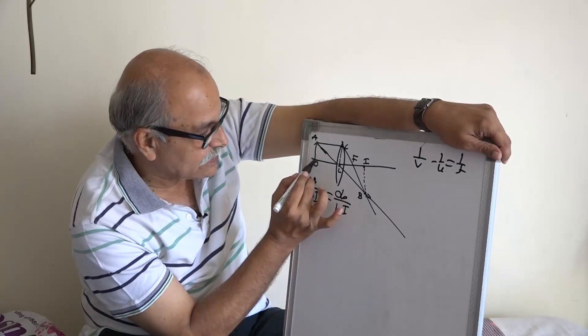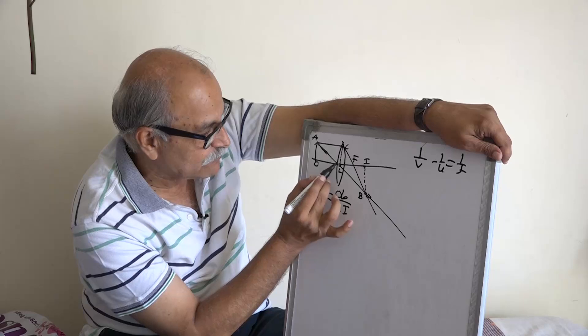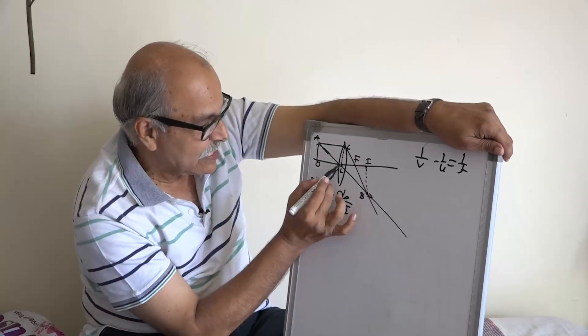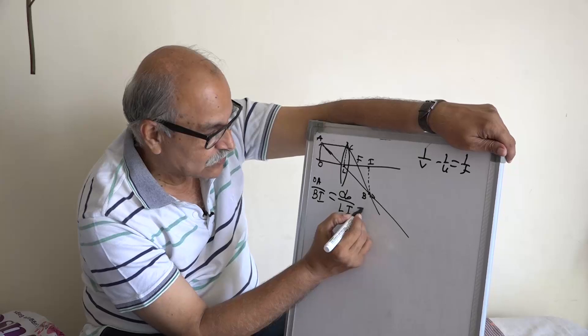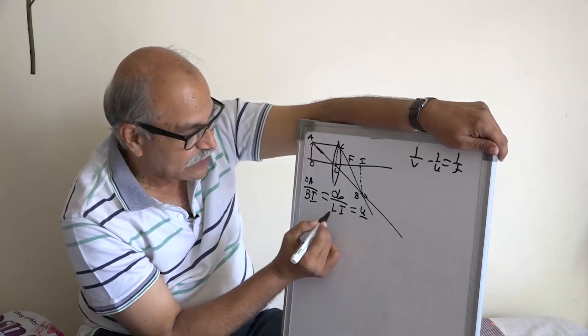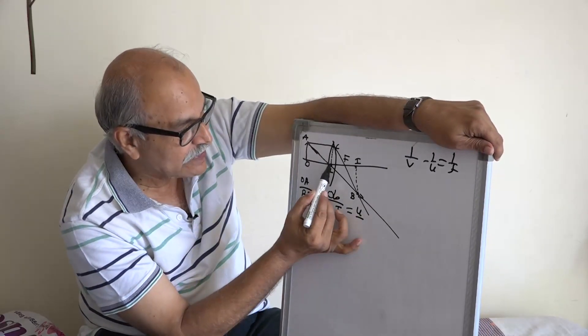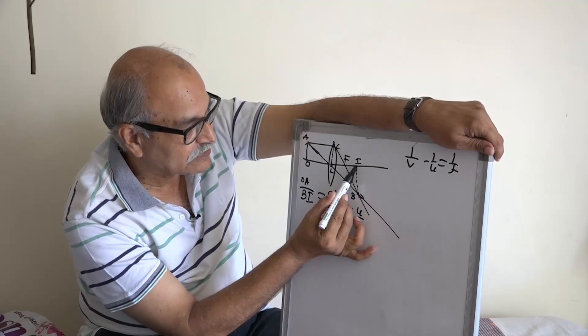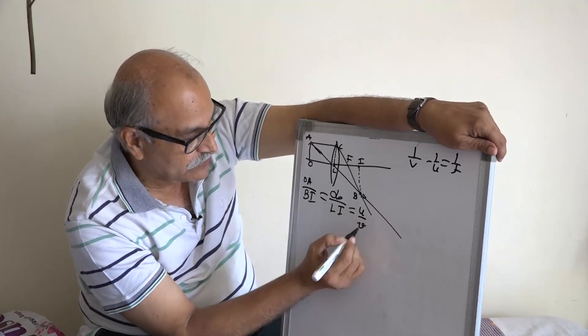O,L, what is O,L? It is distance of the object from the lens, I do not write any minus plus and this is u. This should be u and what is L,I? From the lens to the image, that should be V.